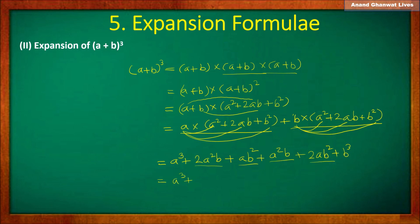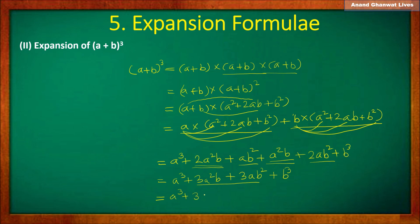That is the expansion of a plus b cubed. We add the like terms: 2a²b plus a²b equals 3a²b, and 2ab squared plus ab squared equals 3ab squared, plus b cubed. We can write this expansion as a cubed plus 3a²b plus 3ab squared plus b cubed, taking out common factors.